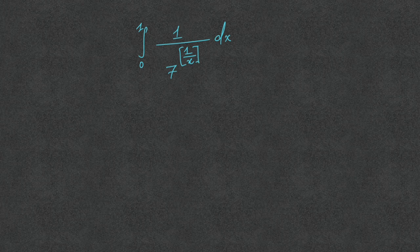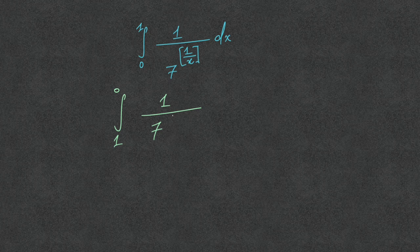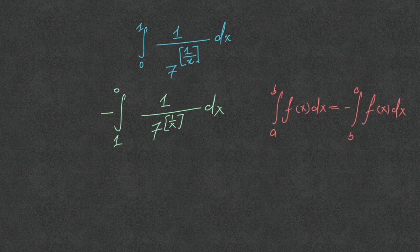The first step is to change the limit from 0 to 1, to 1 to 0, and the rest remains as it is. On changing the limit, we change the sign because of the fundamental property: the integral from a to b of f(x) dx equals minus the integral from b to a of f(x) dx. Applying it here, by reversing the limits we get a negative sign.